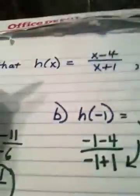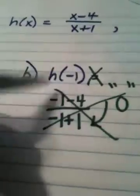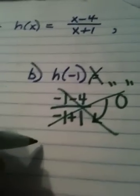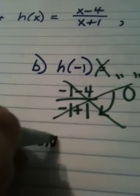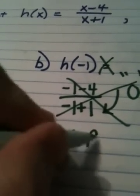Whenever a denominator becomes 0, we're dead. That answer is meaningless, and the correct way to write that, you don't even put equals, h of negative 1, undefined.